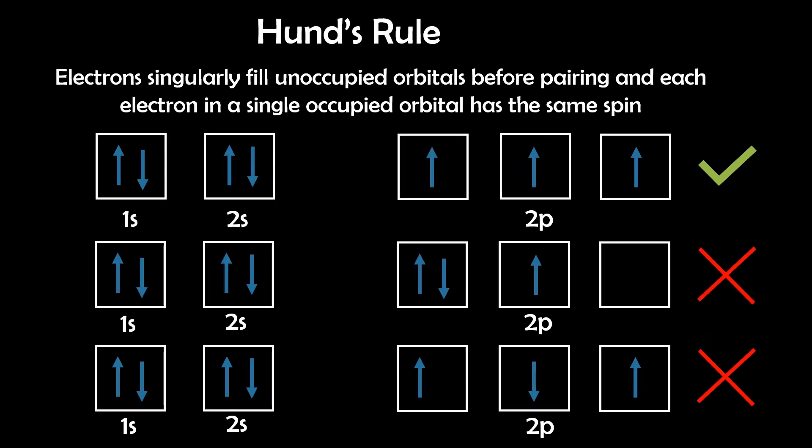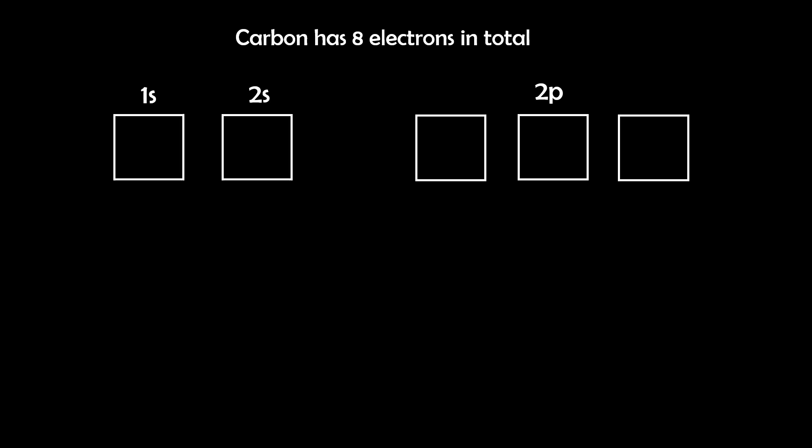Lastly, Hund's rule says that electrons fill unoccupied orbitals before pairing up, as shown in the following diagram. There are exceptions to this rule, particularly when it comes to D and F orbitals, but this will be discussed in later videos.